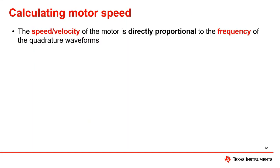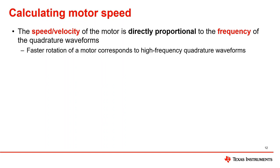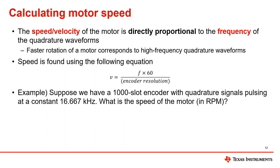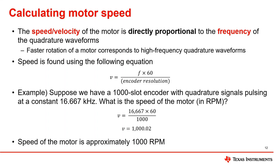The final movement information that can be calculated is the rotational speed or velocity of the motor encoder. The velocity is proportional to the frequency of the quadrature waveforms — a faster moving encoder generates higher frequency quadrature waveforms. The velocity is given by an equation that depends on the frequency of the quadrature waveforms and the resolution of the encoder being used. For example, suppose we have a 1000-slot encoder with quadrature signals pulsing at a constant 16.667 kHz. To find the speed in revolutions per minute, substitute the known values into the velocity equation: 16667 × 60 ÷ 1000 = 1000.02, meaning the motor speed is approximately 1000 revolutions per minute.